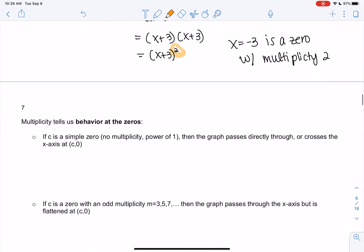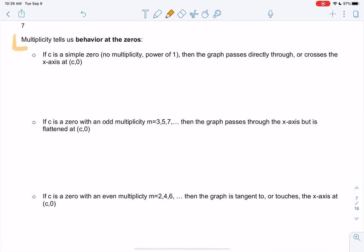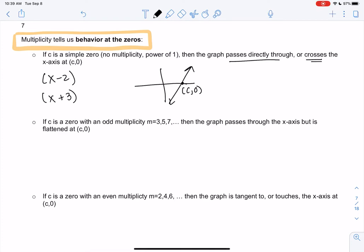Multiplicity tells us behavior at the zero. There are three cases. A simple zero is a power of 1, like (x-2) or (x+3) with no power. It's just going to pass directly through, or we describe it as crosses the x-axis at (c,0). So at (c,0) it just goes through - it may be straight, it may have a little curve, but it just passes through. That's probably what we expect most of the time.